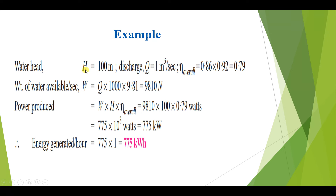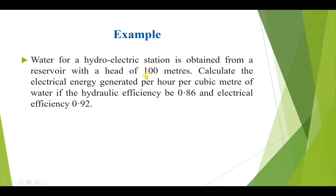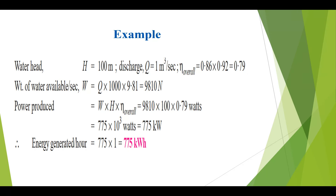This is a simple example. The head is 100 meters, the overall efficiency is calculated from the hydraulic efficiency and electrical efficiency, and the discharge Q is 1 cubic meter per second. We use 1 cubic meter per second because we need to calculate the electrical energy generated per hour per cubic meter of water.